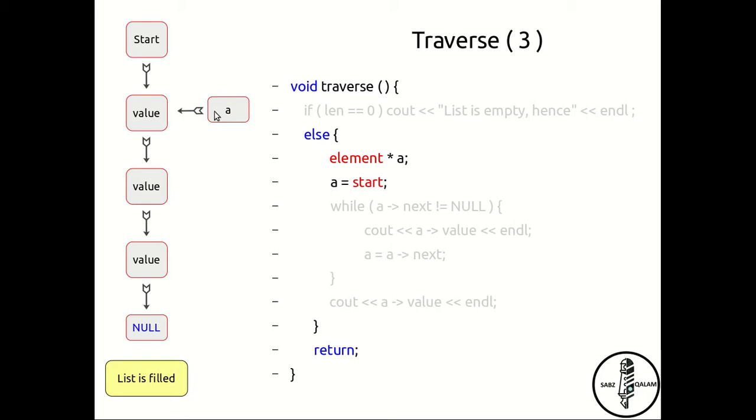We need to do this because we want a separate pointer to point to the linked list. We don't want to update start. Start will always, by definition (you can call it beginning if you want), always point to the first element of the linked list. Now that we have a, let's look at our while loop.